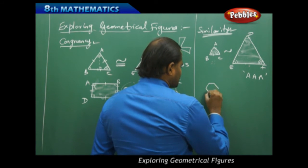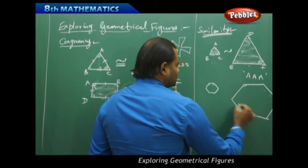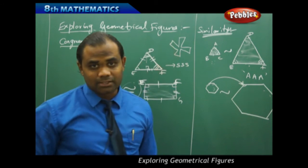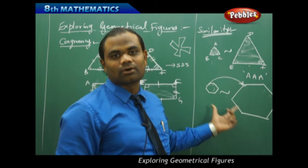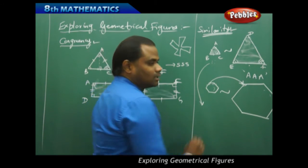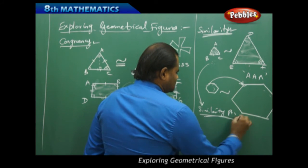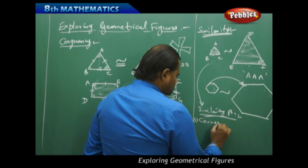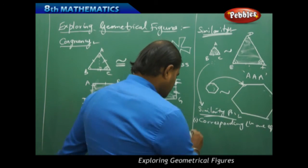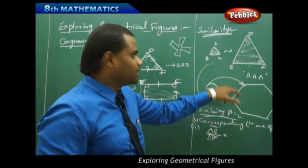For example, a small hexagon might be similar to a big hexagon because their corresponding angles might be respectively equal. In terms of similarity, corresponding angles are equal. Similarly, for triangles, when triangle ABC is similar to triangle DEF, the corresponding angles are equal: angle A equals angle D, angle B equals angle E, and angle C equals angle F.